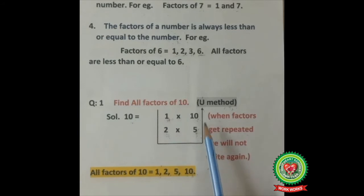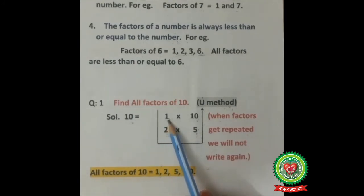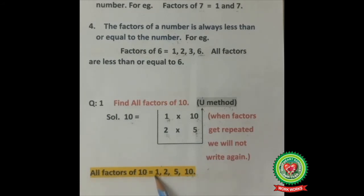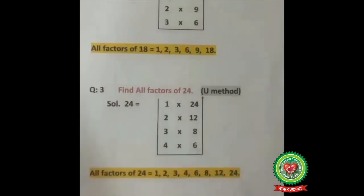Now, how to write the factors: we start from 1, then 2, then turn — 5, 10. So all factors of 10 are 1, 2, 5, and 10.